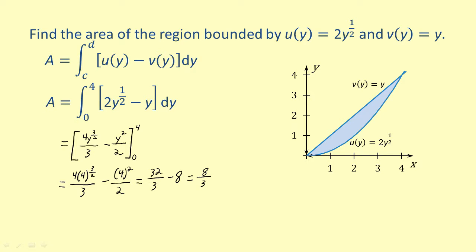Therefore, the area of the region bounded by u(y) and v(y) is equal to 8 over 3 square units.